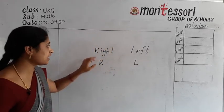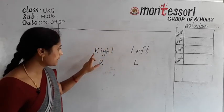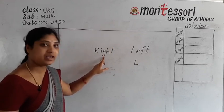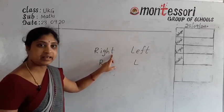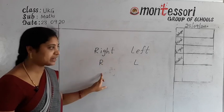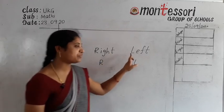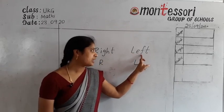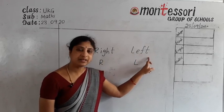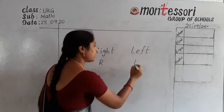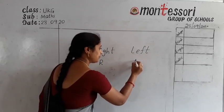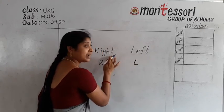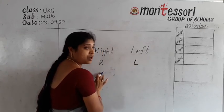Once again, the spelling: Right — R-I-G-H-T. Left — L-E-F-T. Left shortcut L. Right shortcut R.